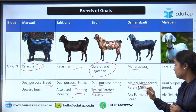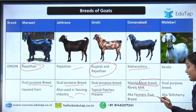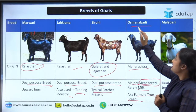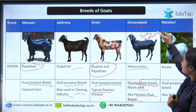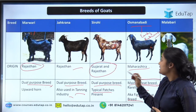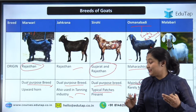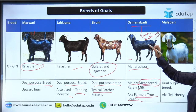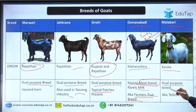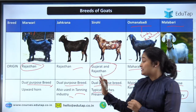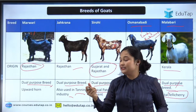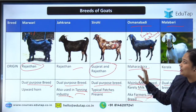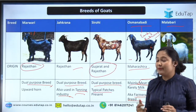Osmanabadi is found in Maharashtra. Its main purpose is meat, though it can be kept for milk when other breeds are absent. It is also called the 'Farmer's True Breed' because it gives early returns compared to other breeds — in just a few months — making it a friend of farmers. Malabari comes from Kerala and is also a dual-purpose breed. One important thing: it is also known as Tella Cherry. Tanning industry uses the skin from these goats; Betal is most preferred for that purpose.